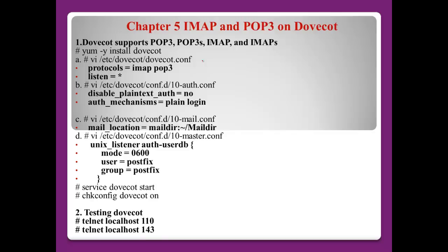Dovecot supports POP3, POP3S, IMAP, and IMAPS. To use Dovecot, we need to install it first using this command: yum -y install dovecot.